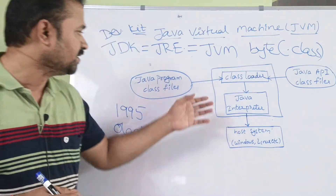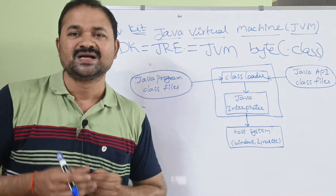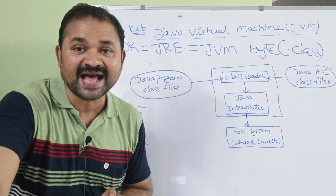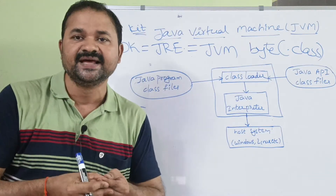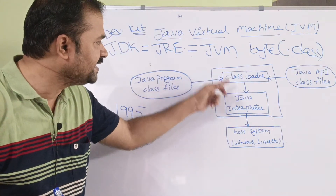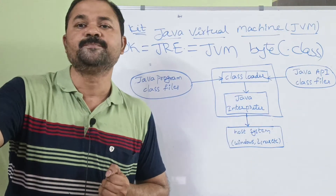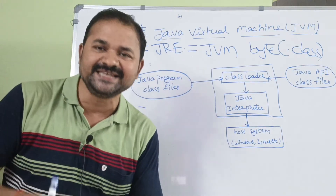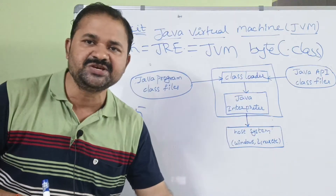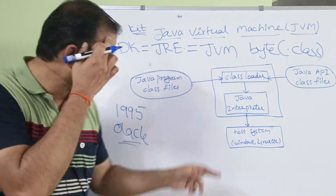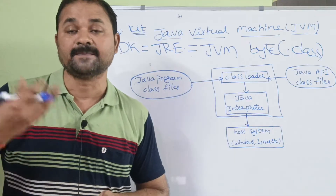JVM mainly contains two things: class loader and Java interpreter. The class loader loads the main class into the JVM for execution, because that main class file is needed at runtime. The Java interpreter executes the bytecode line by line — that is how JVM executes the Java program line by line.